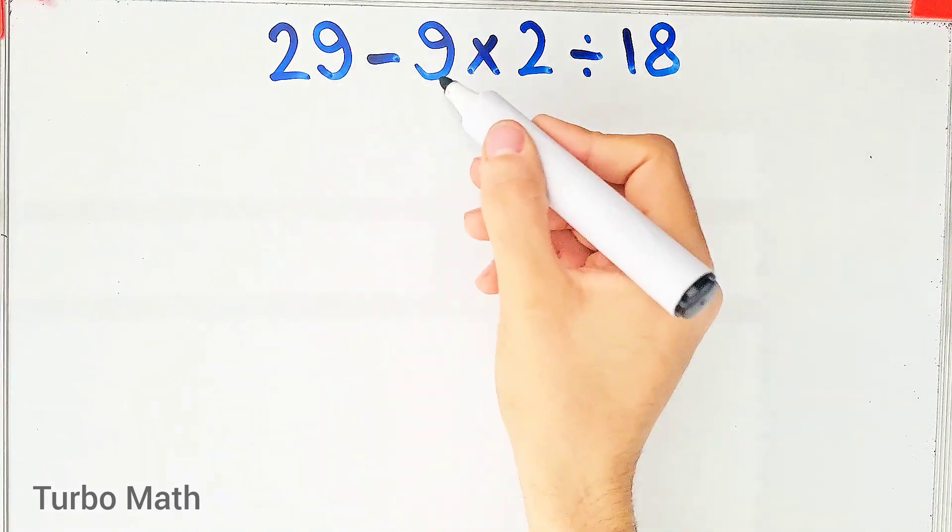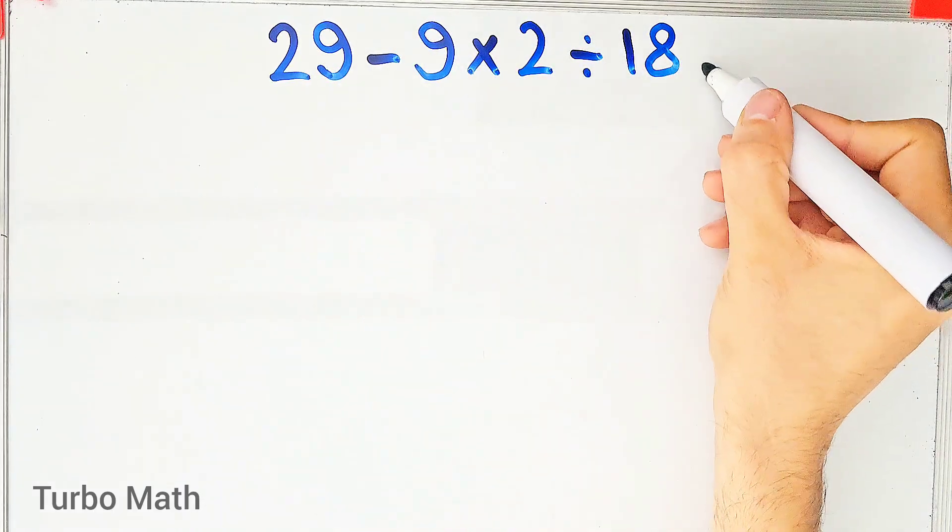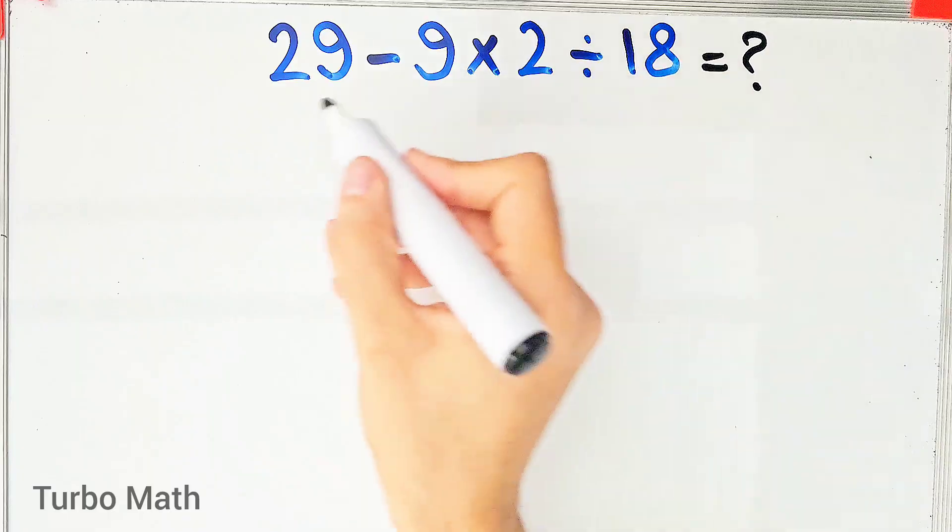29 minus 9 times 2 then divided by 18. What is the answer of this question? Can you solve it?